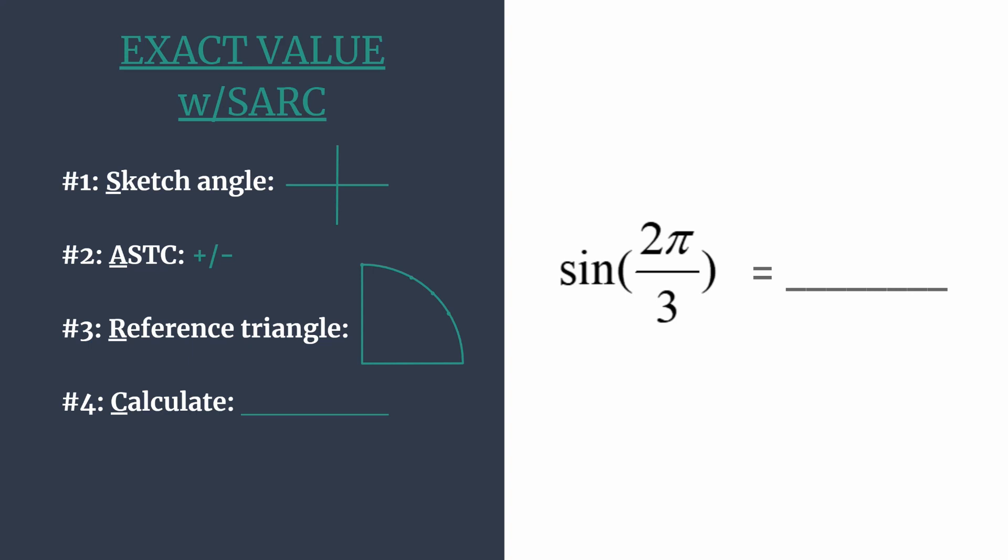So we'll start by sketching the angle. So 2π over 3. We know that we're sketching the terminal side. Here's π over 2. Here's π. And so two-thirds π must fall between there.